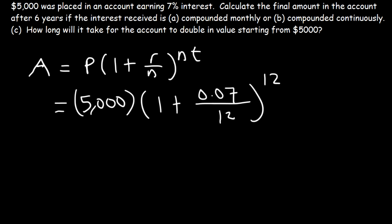Now we want to find out how much money will be in the account after 6 years. T is the time in years. So now all you need to do is just type this in your calculator exactly the way you see it. And you should get $7,653. So it's $7,600.53.